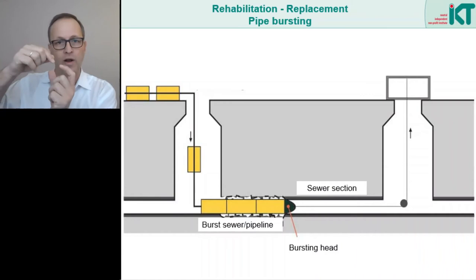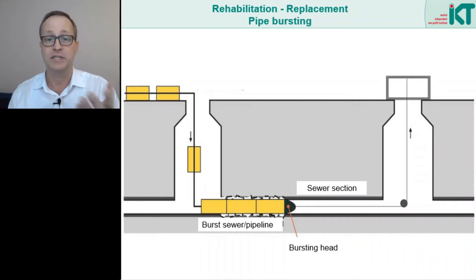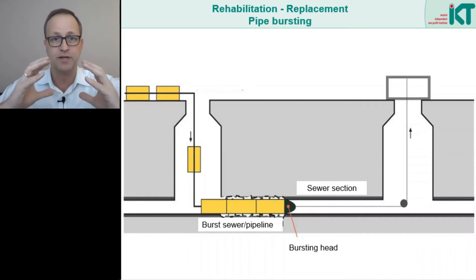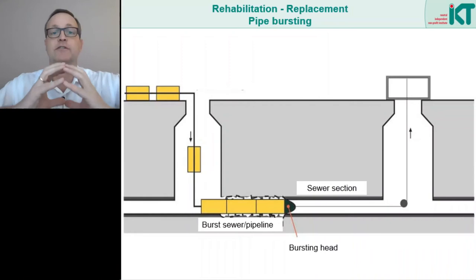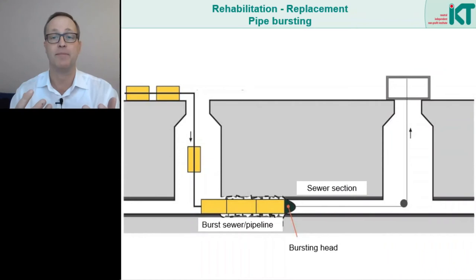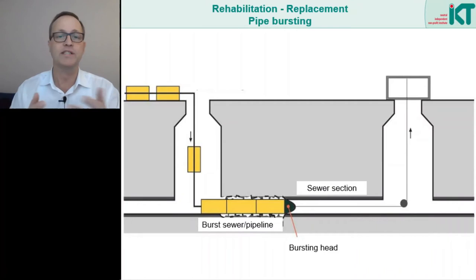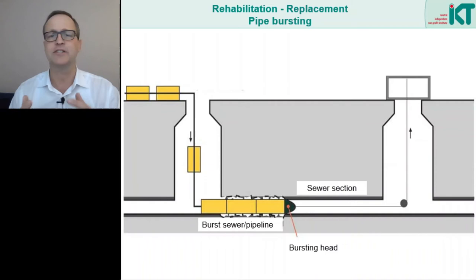This can be critical especially for pressure pipes, because the internal pressure also generates tensile stresses in the pipe wall. If the tensile stresses from internal pressure and the bending tensile stresses from the point load overlap, then in some cases a critical tensile stress level can be reached. In consequence the pipes may fail before the end of the intended service life. However this case is not relevant for gravity pipelines, as they don't have such high internal pressure.